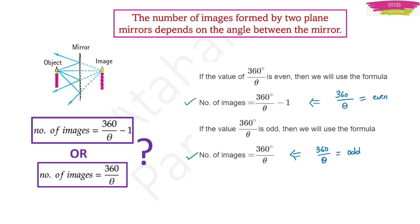To summarize: if 360/θ is even, use 360/θ − 1. If 360/θ is odd, use 360/θ as it is.